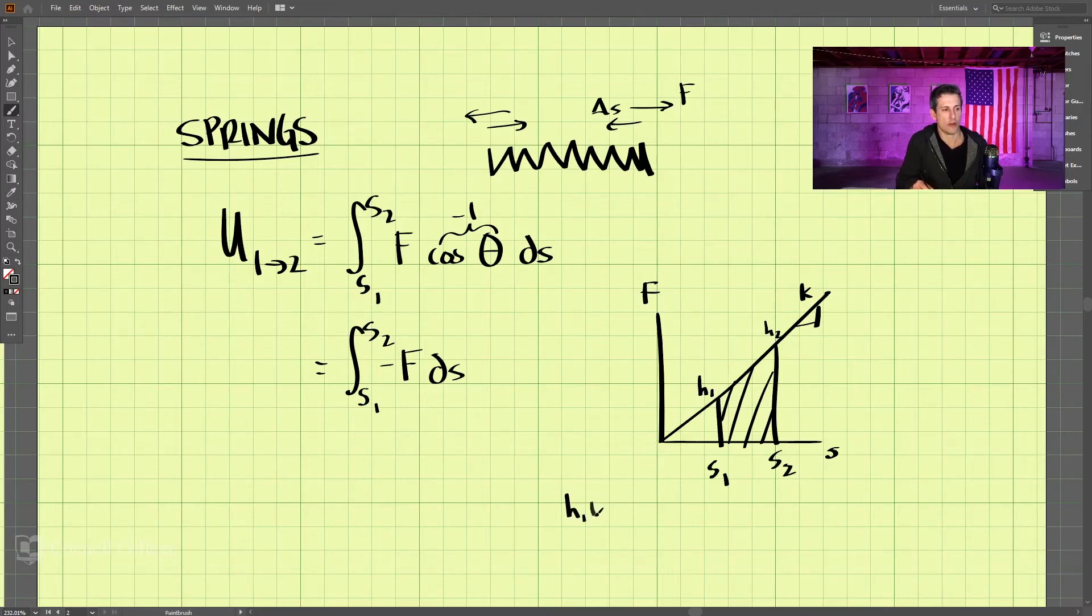We take h1 plus h2 divided by 2 times the base. And the base is here. So this would be the area of this trapezoid.